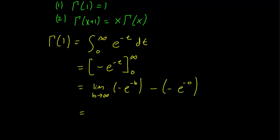So this is the exponential function with a negative exponent. This limit is going to be 0, and this is just going to be 1. And there you have it, gamma 1 equals 1.